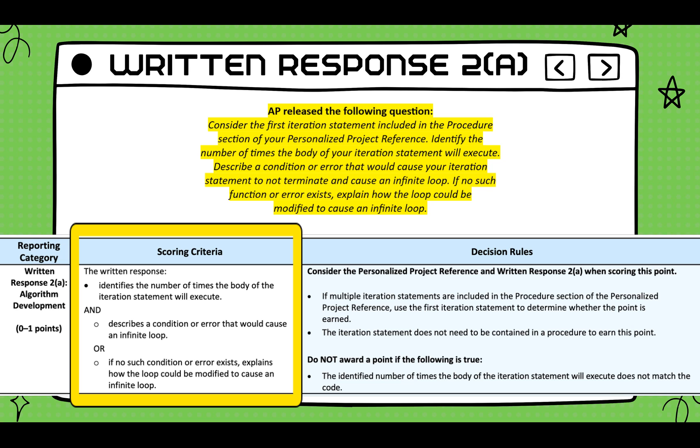AP released the following question: Consider the first iterative statement included in the procedural section of your personalized project reference. Identify the number of times the body of your iterative statement will execute. Describe a condition or error that would cause your iterative statement to not terminate and cause an infinite loop. If no such condition or error exists, explain how the loop could be modified to cause an infinite loop.